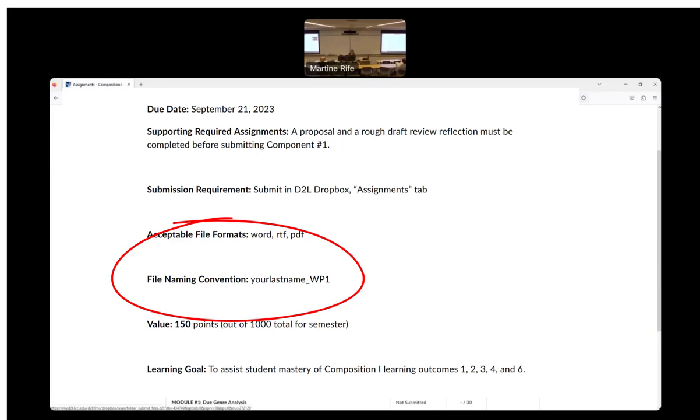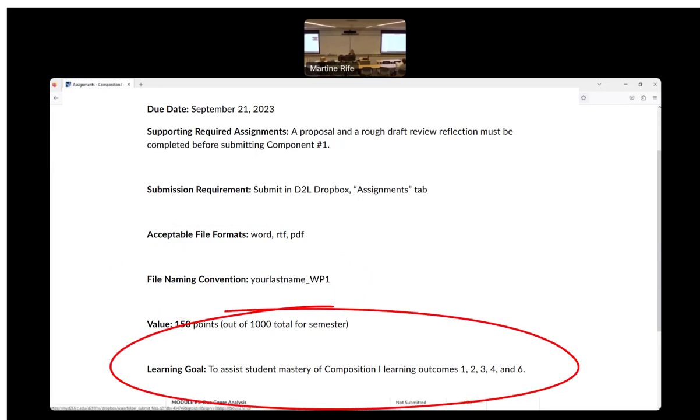You might need to do this at some places that you work. Like for me, sometimes when we have to submit a form or something, they'll tell us how they want us to name the form. So it's good practice. Your last name, underscore, WP1 for Writing Project 1. It tells you what learning objectives this assignment aligns to.